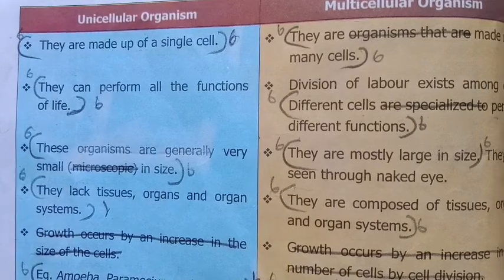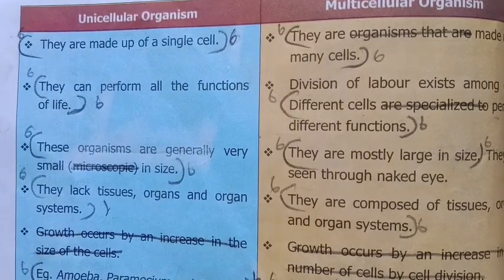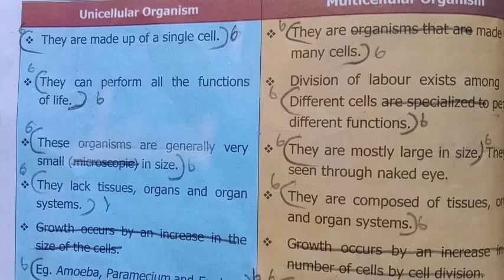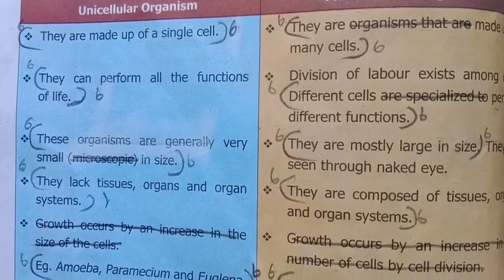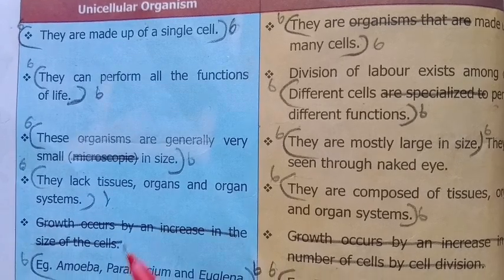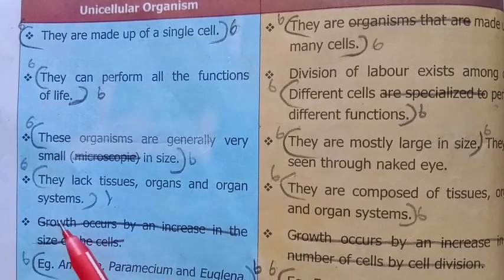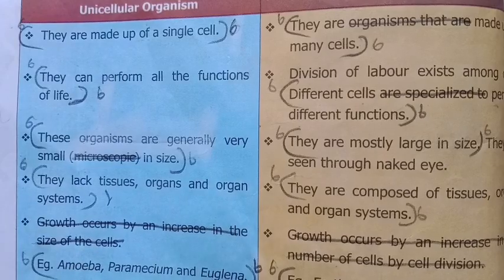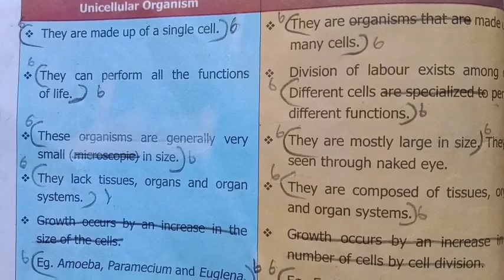Complete the table for full marks. The table has 6 points total; write 5 points for marks. Include examples for additional marks.